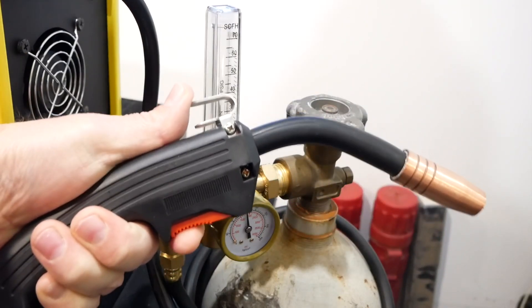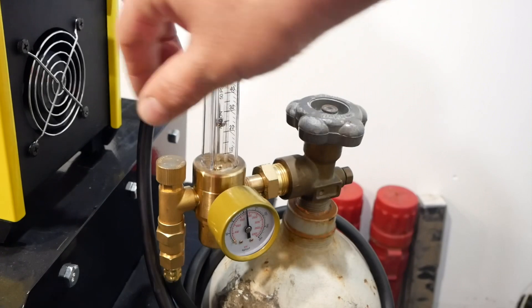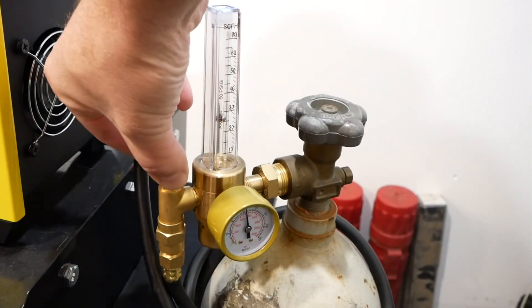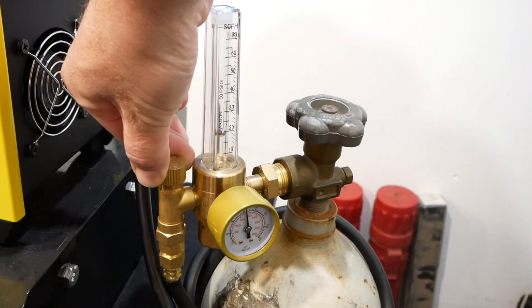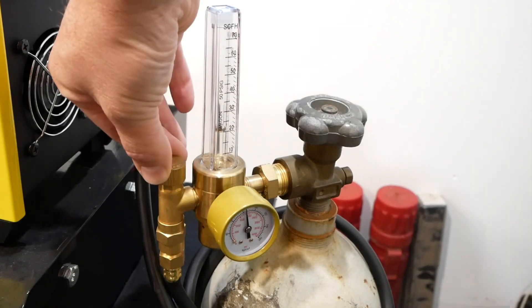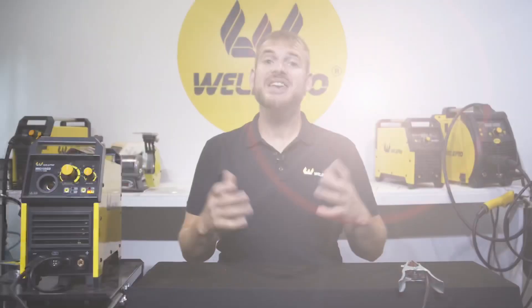With the machine energized, squeeze the trigger on the MIG gun. This will open the solenoid valve and start the flow of gas. We use the brass screw on the flow meter to adjust the flow rate. I'm going to set mine at 20 cubic feet per hour. Now that we have our gas connection set up, let's go ahead and set up the face of the machine, including the MIG gun.